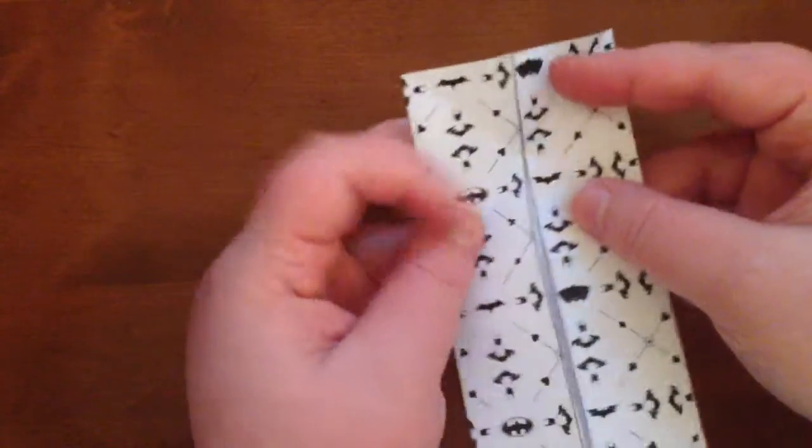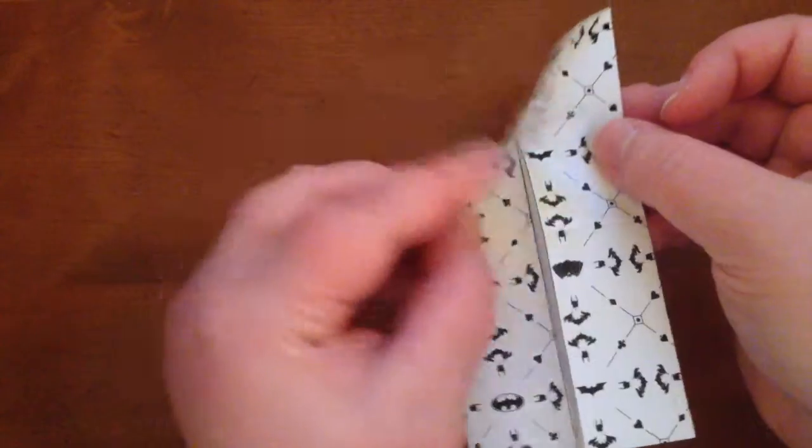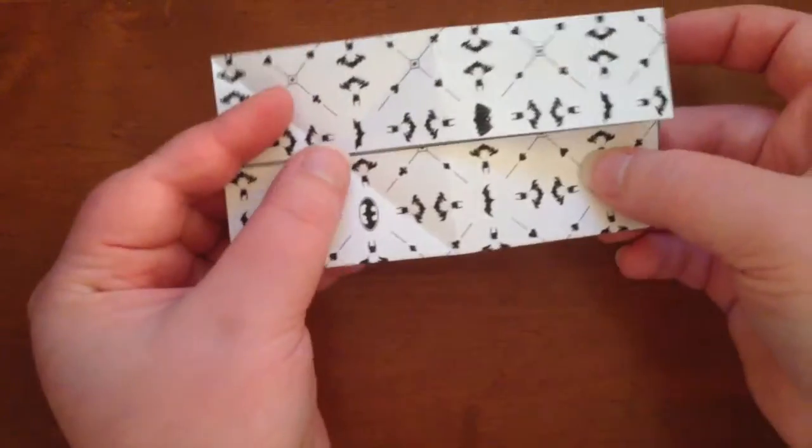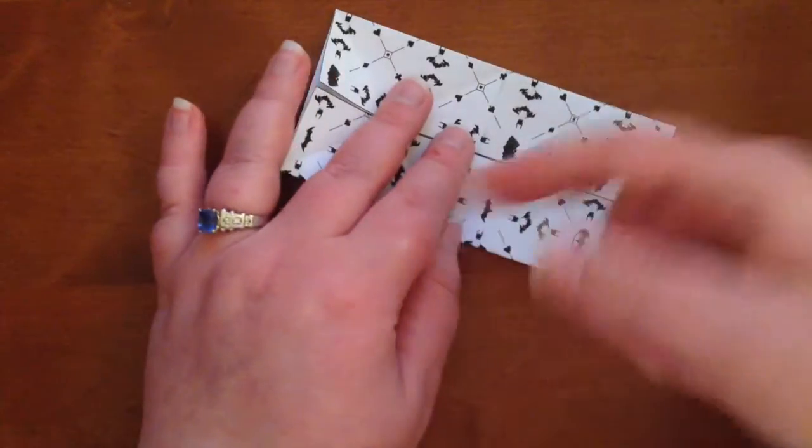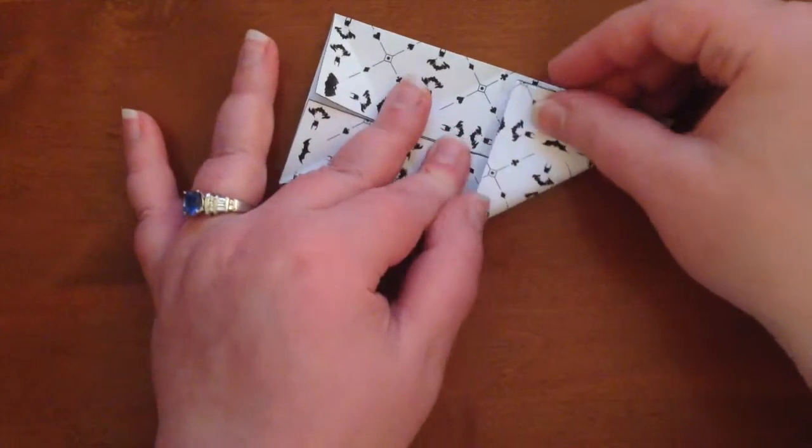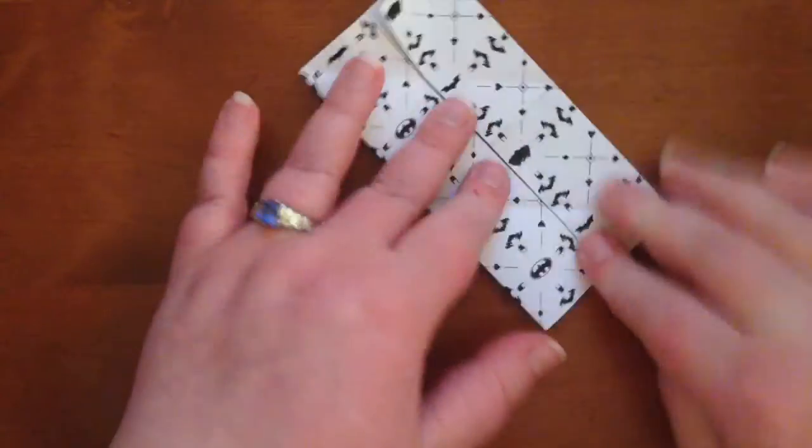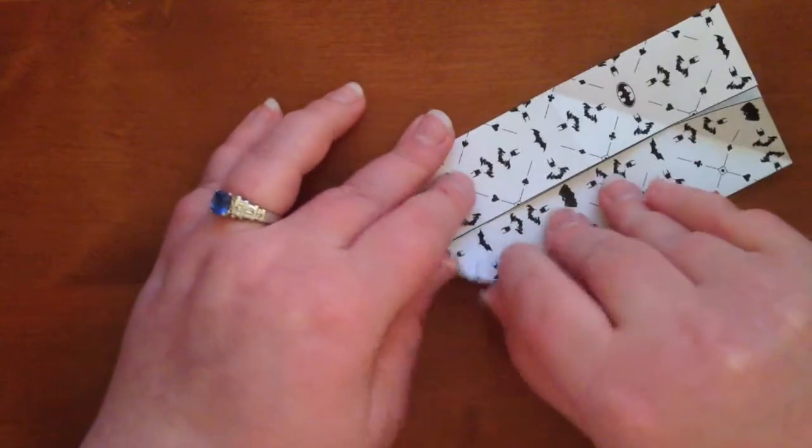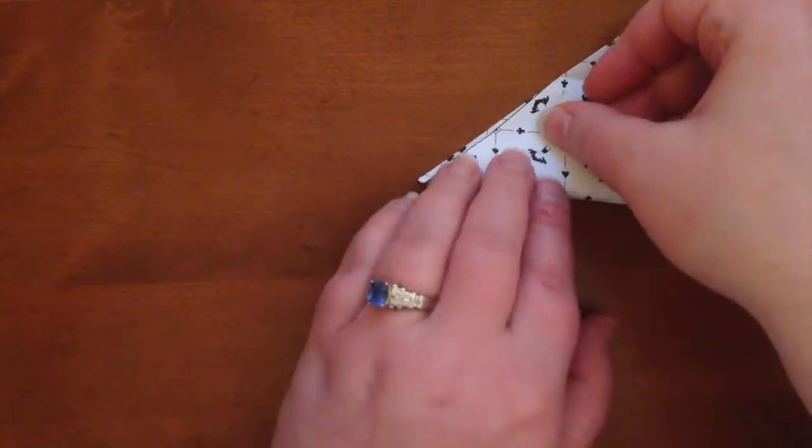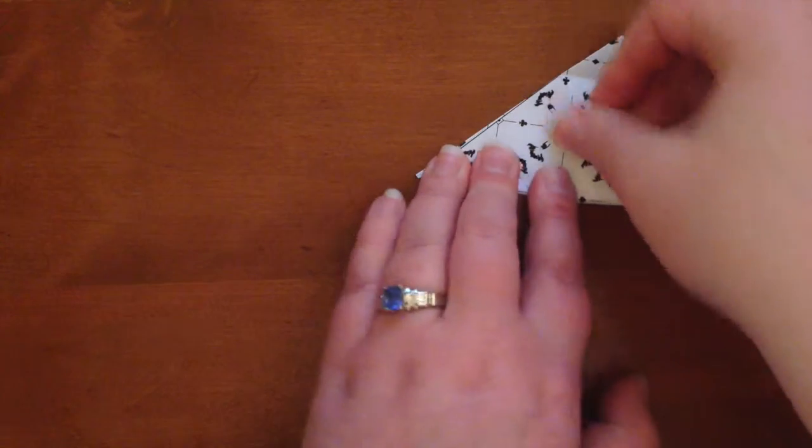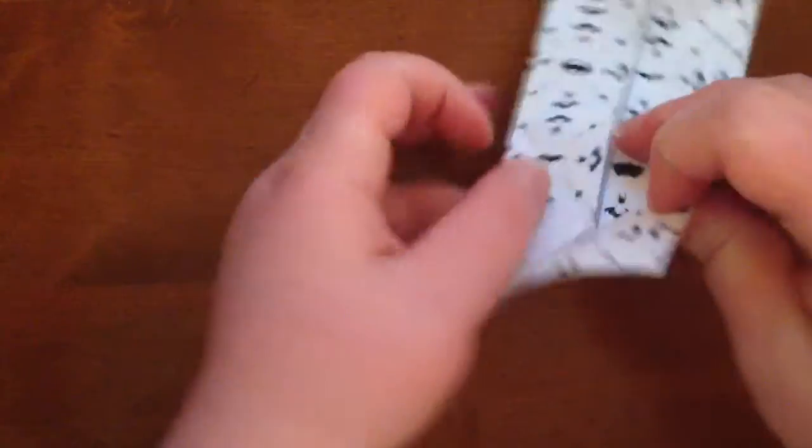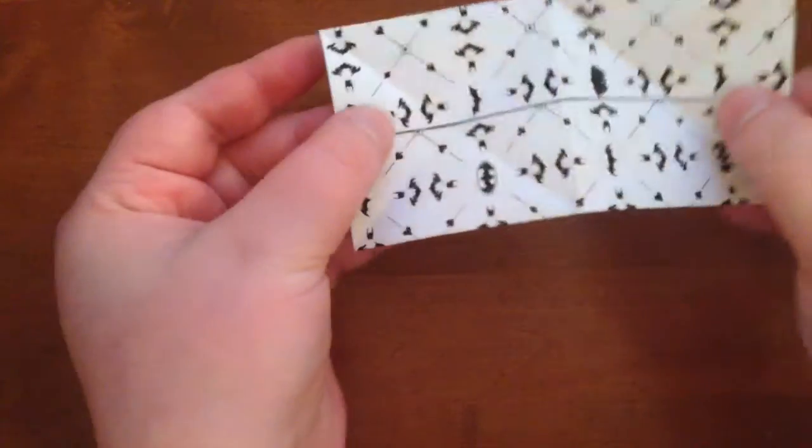Now you'll see that that square has turned into an X. You're going to do the same thing on this end, because it wants to be just like its little friend over there. So you're going to fold that, meet, nice firm crease, flip around, do the same thing, meet in the middle, nice firm crease. Now you have two lovely little X's.